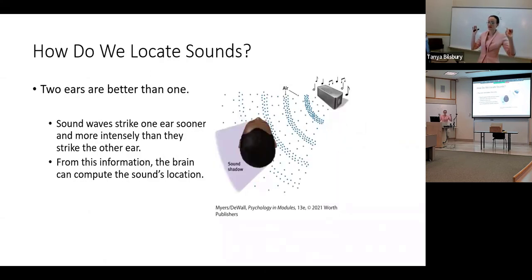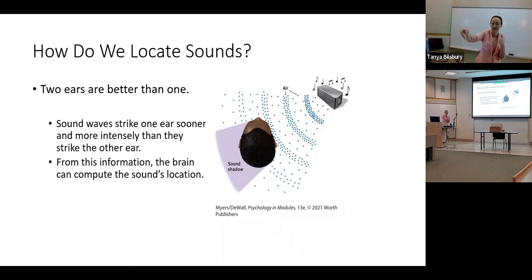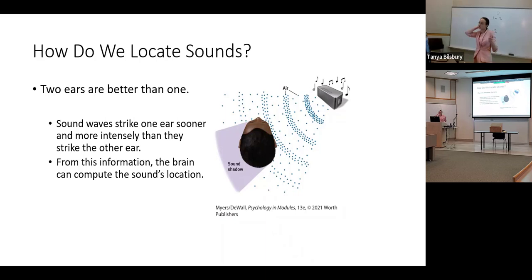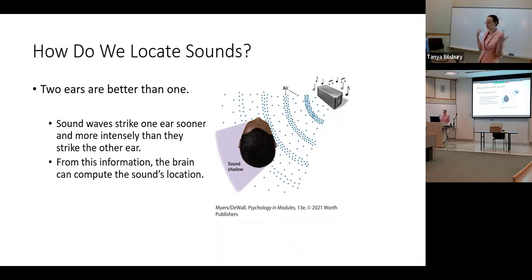Just like we use our two eyes to judge depth, we have two ears. If something is close to you, it will hit your closer ear a little bit sooner than the ear on the other side of your head, and your brain uses that to compute the location of the sound.